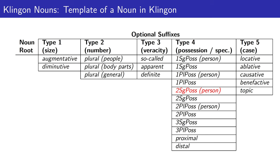If the noun root refers to a person, there could be a second person singular possessor, or a second person plural possessor. For third person, it doesn't matter whether the noun root refers to a person or not. There is a suffix for third person singular possessor and a different one for third person plural possessor.